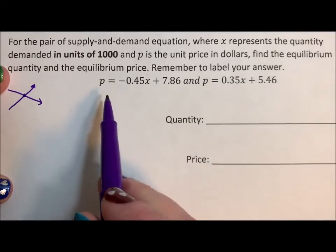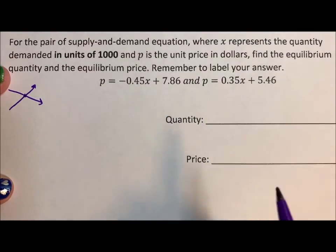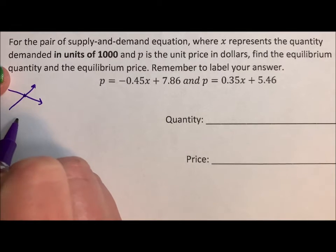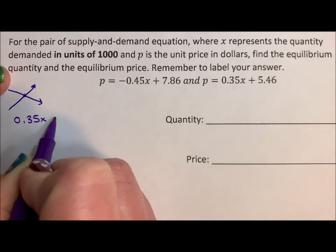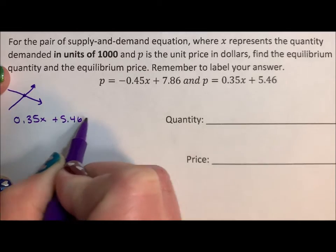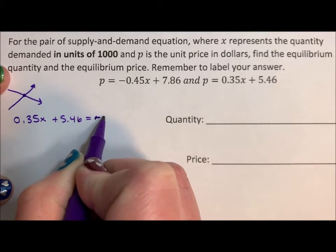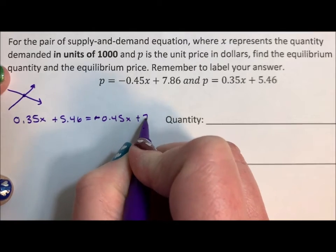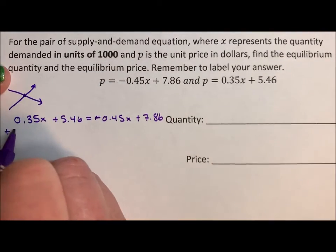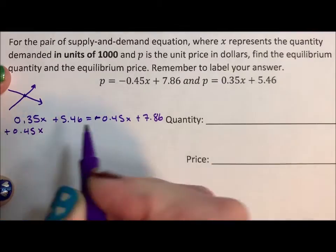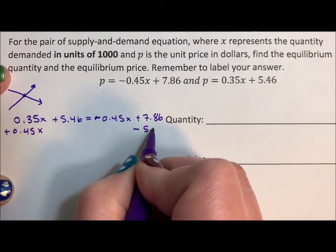The way we do this is we take our supply and demand equations and we set them equal to each other. So plus 7.86. So I'm going to add 0.45x over and subtract the 5.46.